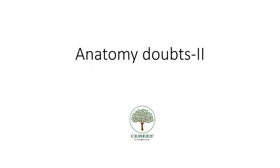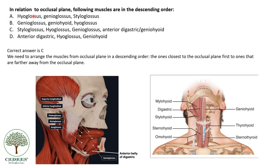Some more anatomy doubts. First question: in relation to the occlusal plane, arrange the following muscles in descending order — the muscles closer to the occlusal plane come first. Looking at the image, the topmost is styloglossus, then hyoglossus, then genioglossus, then the anterior belly of the digastric, and next to it is the geniohyoid.